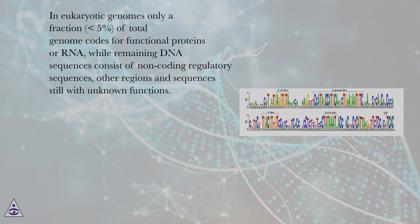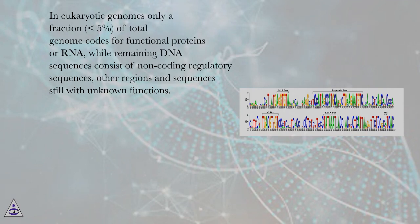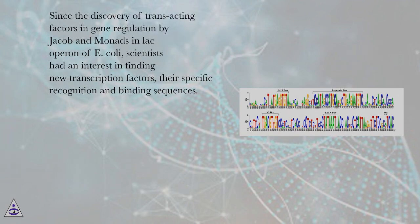In eukaryotic genomes, only a fraction — less than 5% — of the total genome codes for functional proteins or RNA, while remaining DNA sequences consist of non-coding regulatory sequences, other regions, and sequences still with unknown functions. Since the discovery of trans-acting factors in gene regulation by Jacob and Monod in the Lac operon of E. coli, scientists have set an interest in finding new transcription factors and their specific recognition and binding sequences.